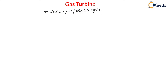Now in this cycle, let us understand the various processes. In case of a gas turbine, all the processes are flow processes. All are flow processes, meaning all are flow devices. Flow devices means open systems.